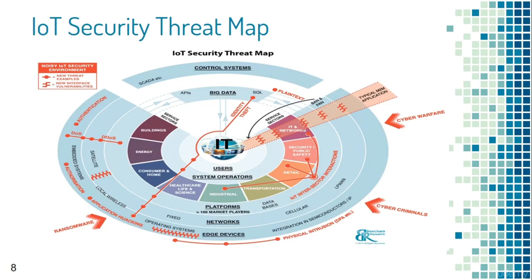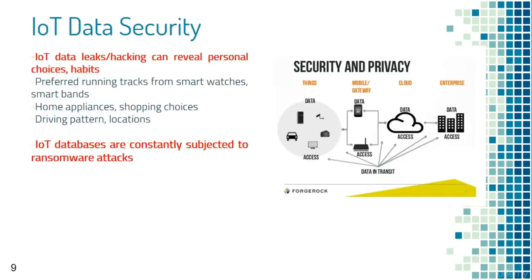There is a detailed threat map showing various levels of attacks such as ransomware, cyber criminalism, cyber warfare, and physical intrusion to IoT devices. Many companies launch IoT products that communicate data without any encryption, so data in transit can easily reveal personal choices — such as preferred running tracks, home appliance usage, shopping choices, locations, driving patterns, and other habits from IoT data leaks and hacking. IoT databases stored in systems like MongoDB are also subjected to attacks.